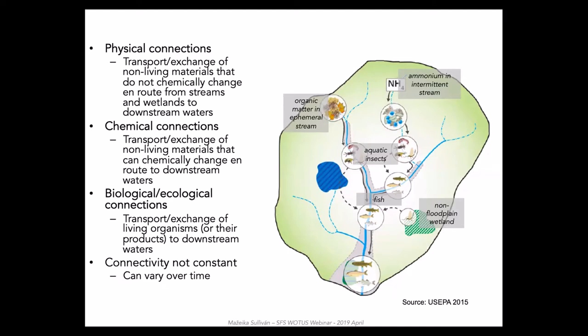Hydrologic connectivity is a type of physical connection. Other connections are also critical to consider and include chemical connections and biological or ecological connections. This is a key point, as the intent of the original Clean Water Act was to restore and protect biological, chemical, and physical integrity of our nation's waters — all three dimensions of water quality, not one or another. Connectivity can also vary over time. Ephemeral streams may have flow for short periods of time but can make up large portions of stream miles in some areas of the country, such as the arid southwest.